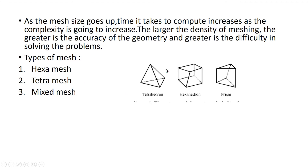Tetramesh uses tetrahedral elements and Hexamesh uses hexahedral elements. Mixed mesh is a combination — it is like a prism shape. A prism has a triangular base, and the mixed mesh combines these element types.